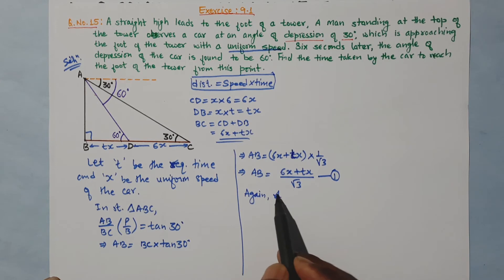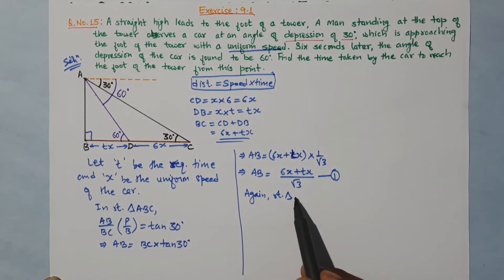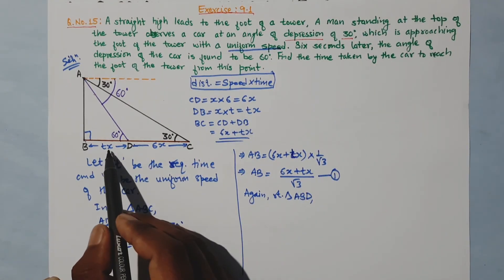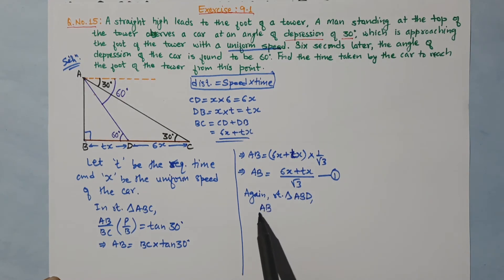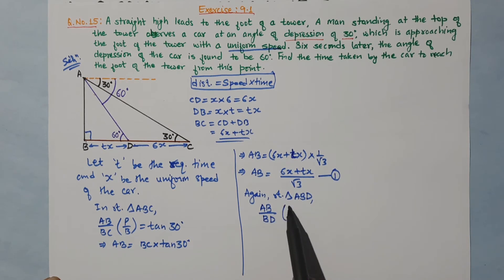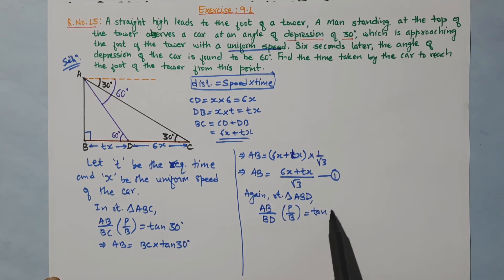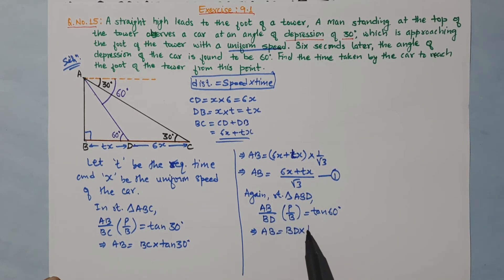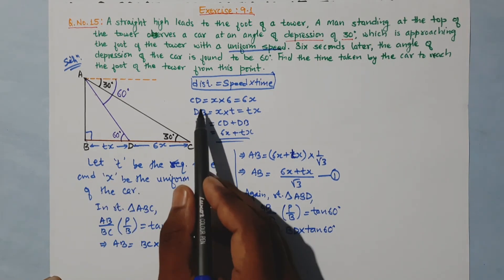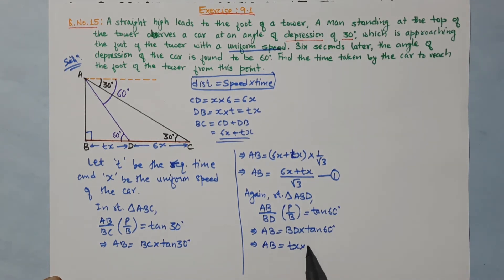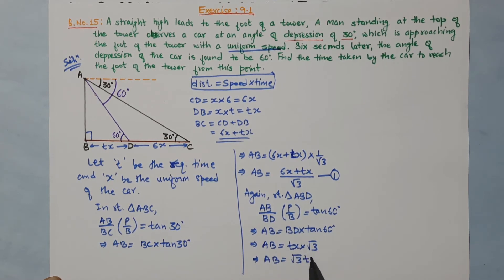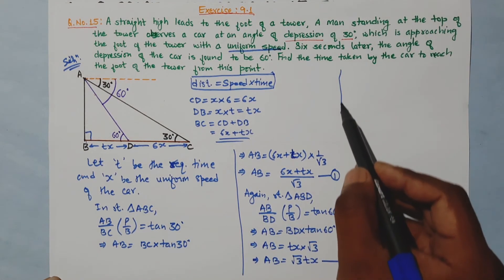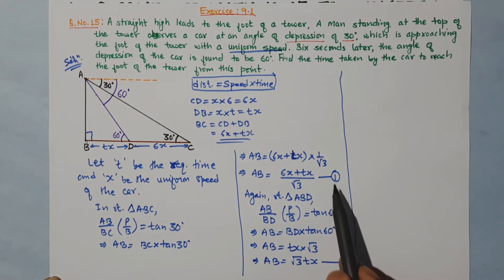In right triangle ABD, using tan 60 degrees: AB over BD equals tan 60 degrees, which is root 3. So AB equals BD into tan 60 degrees. BD is Tx, so AB equals Tx into root 3, which gives AB equals root 3 Tx. This is equation 2.